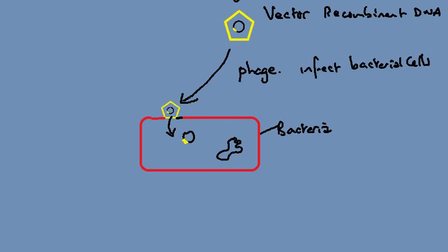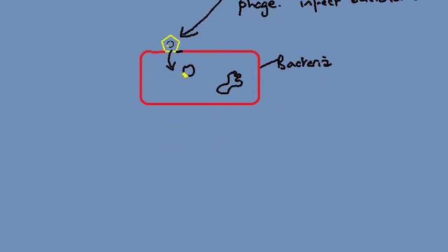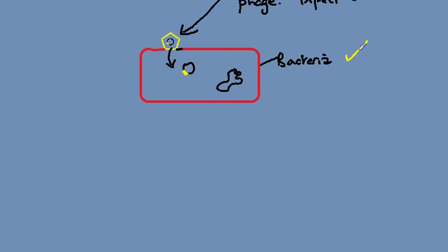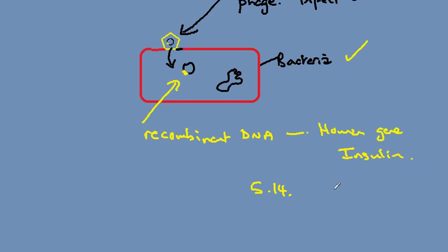At the end of this process we have a bacterial cell which now contains the recombinant DNA, including the human gene for insulin. In 5.14 we will explore the production of insulin.